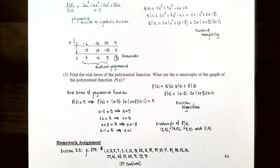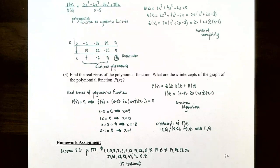This finishes our video on dividing polynomials. We've talked about how to use long division and synthetic division to divide two polynomial functions, and also the remainder and factor theorems to help find real zeros of a polynomial function. If you have any questions about any examples in this video or about homework for this section, please let me know. I'll see you in the next video when we talk about real zeros of polynomial functions.